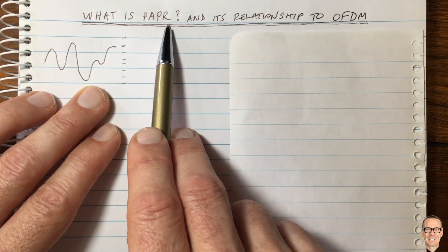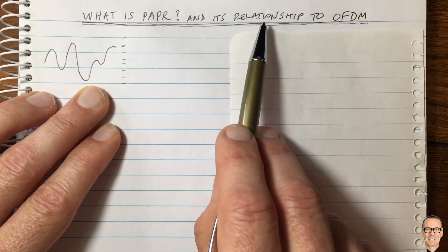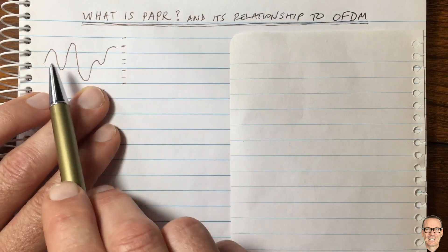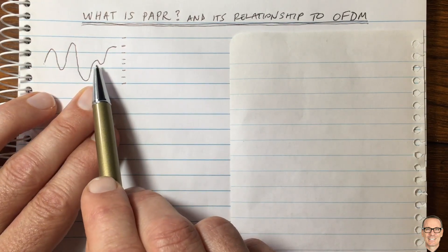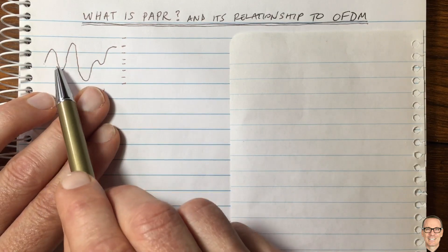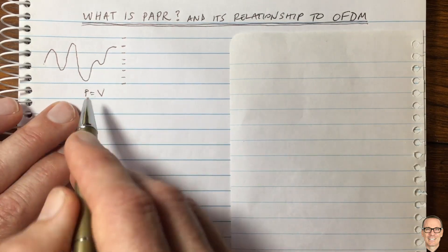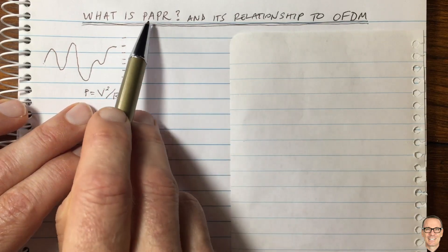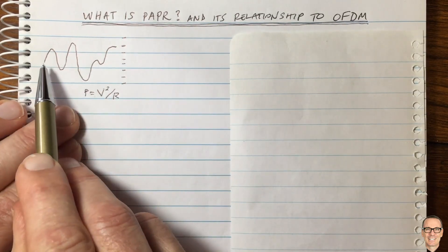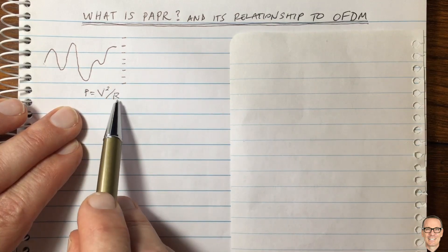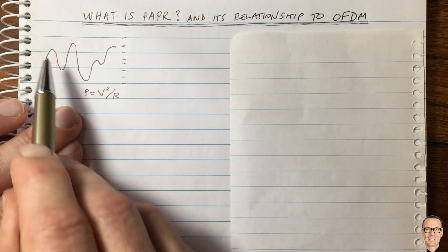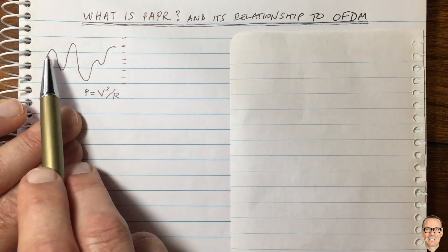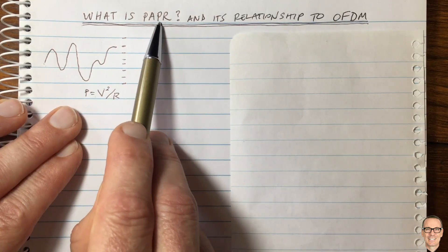What is PAPR and what's its relationship to OFDM? PAPR stands for peak-to-average power ratio. Consider a signal like a voltage waveform of a voice recording. Power equals voltage squared divided by resistance. If we look at the peak-to-average power ratio, we take the square of the voltage and for a unit resistance, we get the power waveform. Then we look at the peak, divide it by the average, and that gives us the peak-to-average power ratio.